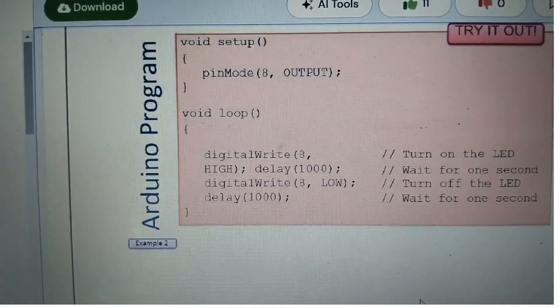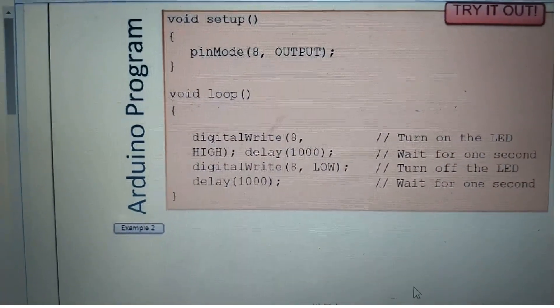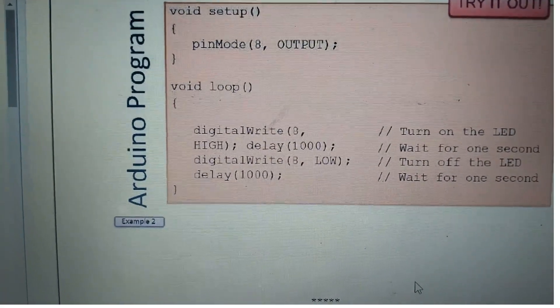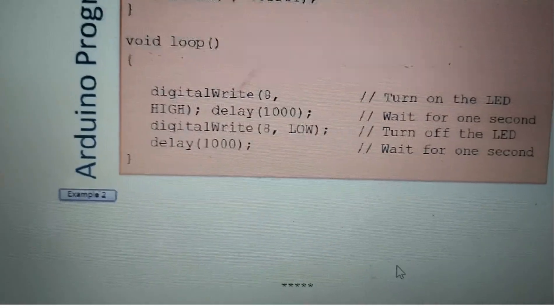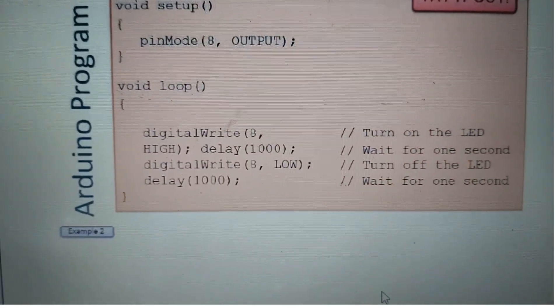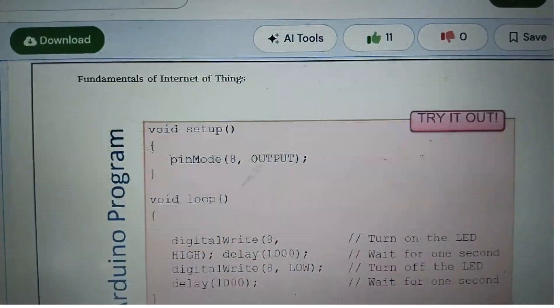digitalWrite 8 low - low means off. delay 1000 means wait for one second. This is the Arduino program.